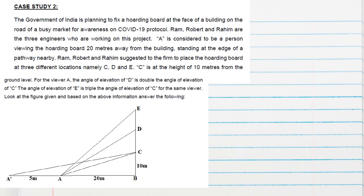Weaving the holding board 20 meters away from the building. So BE is nothing but our building. This is our building. And A is weaving the board 20 meters away from the building. So AB distance is 20 meters. Ram, Robert and Rahim suggested to firm the place the holding board at 3 different locations C, D, E. So these 3 are the different suggested places for the holding board.